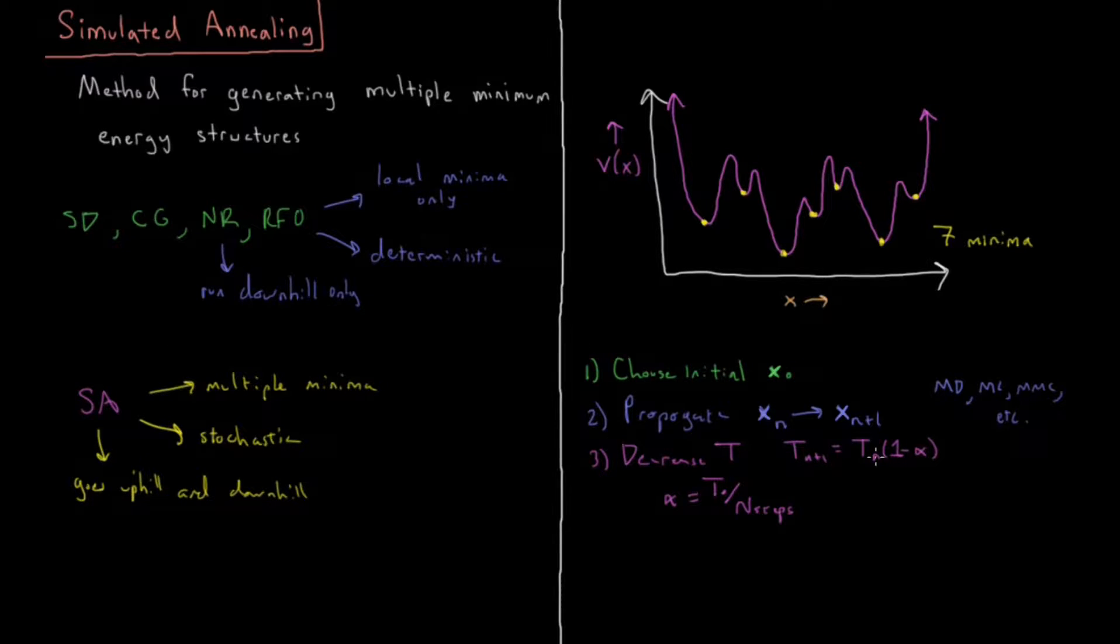And then actually it would be T_0 times one minus alpha times N_trial, the number of the trial. Linear progression down towards T equals zero.